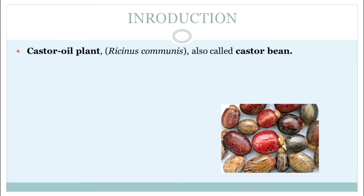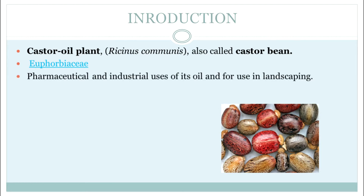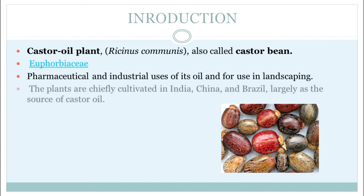First, the introduction: the castor oil plant. This plant is also known as Ricinus communis, or the castor plant. We get an oil from this plant, hence it is also called the castor oil plant or castor bean plant. Despite its name, it is not actually a true bean. This plant belongs to the family Euphorbiaceae. It has pharmaceutical and industrial uses, and is very popular for its castor oil. It is grown in countries like India, China, and Brazil mainly for its castor oil, which is famous for its purgative action — it facilitates bowel movement.